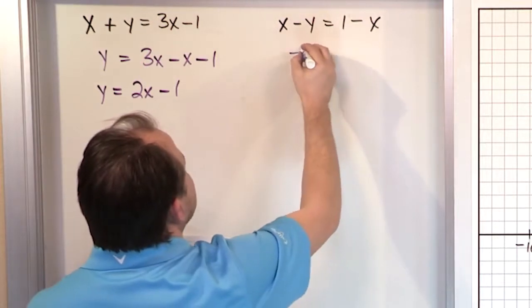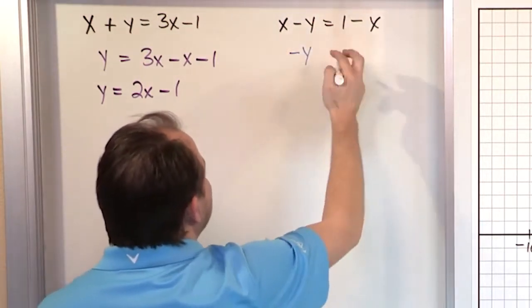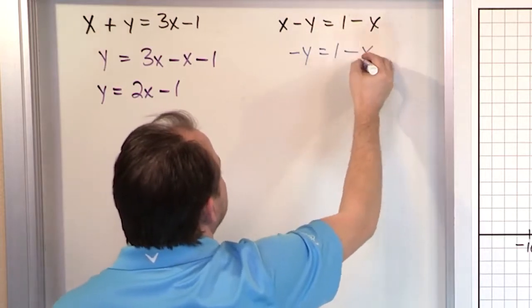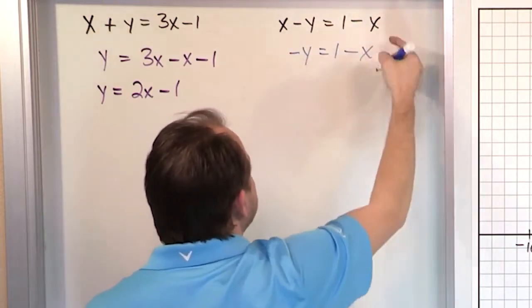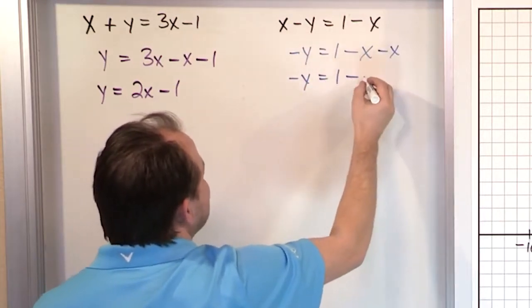So here I'm going to leave the y alone, but don't forget it's got a minus sign in front. You can't just get rid of it. Let me subtract the x over here, so I'm going to have 1 minus x from here, and then I'll subtract another x like this, and I'll carry out the subtraction in the next line.